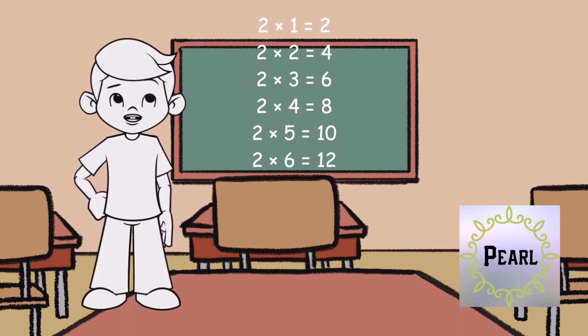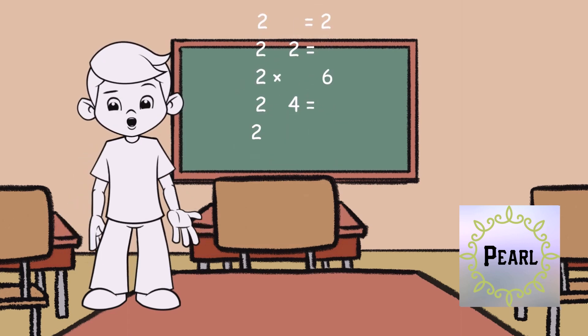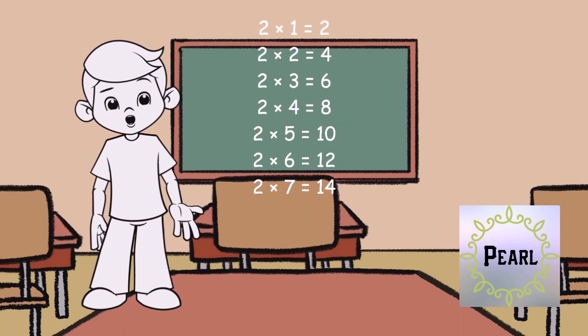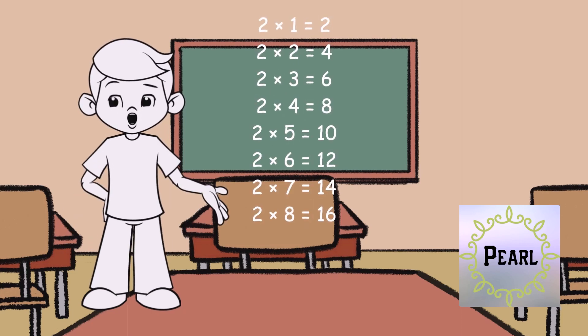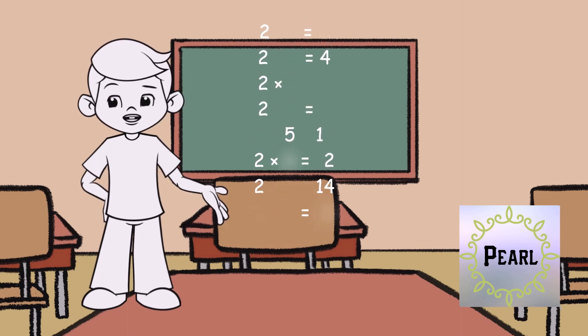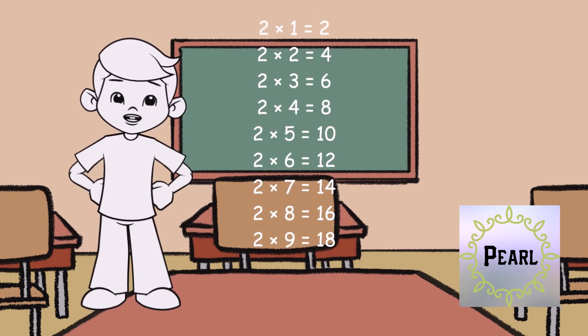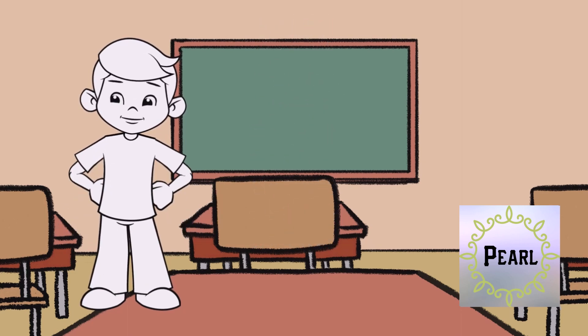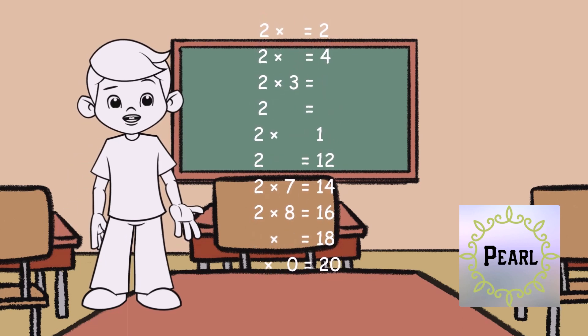2 x 6 is equal to 12. 2 x 7 is equal to 14. 2 x 8 is equal to 16. 2 x 9 is equal to 18. 2 x 10 is equal to 20.